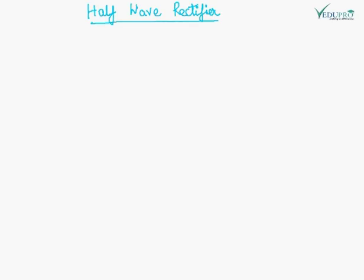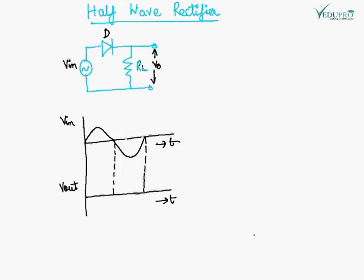Now we will see the circuit diagram of the half wave rectifier. This is the circuit of the half wave rectifier and the figure below is the waveform of the input voltage. We want to plot the output waveform. When the input is positive, that means when the positive cycle is on the input side, this terminal will be positive and this terminal will be negative. The positive terminal is connected to the anode of the diode.